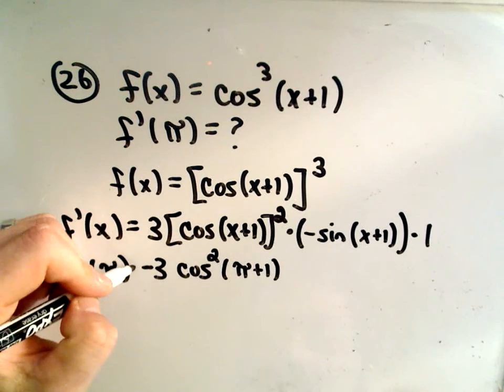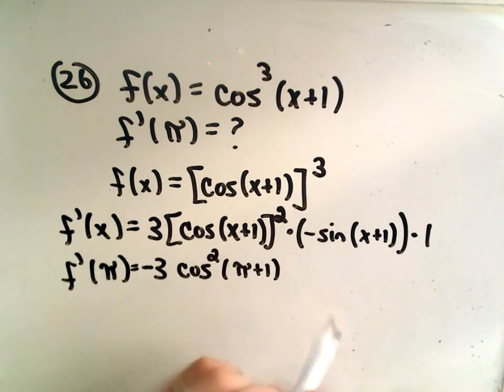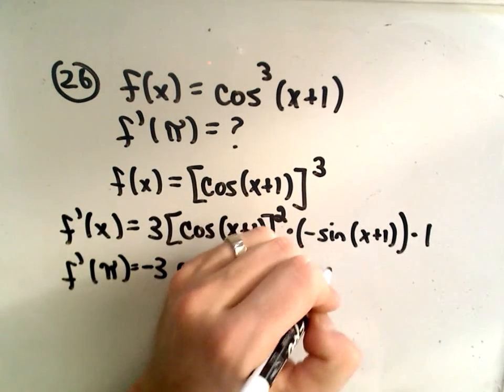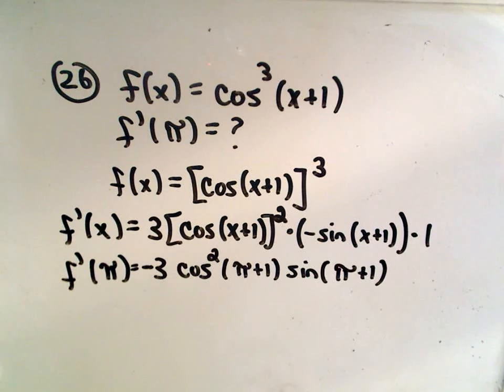Then this negative that we picked up from taking the derivative of the cosine to get negative sine, I'm actually going to pull that out front. So there we have negative 3 cosine squared, so that takes care of my negative. And then we would have sine of π plus 1. And that will be our derivative. That's how they write it. Negative 3 cosine squared π plus 1 times sine of π plus 1.